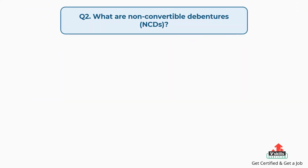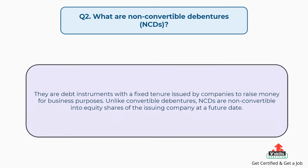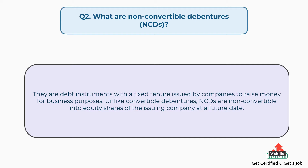Question number two: what are non-convertible debentures (NCDs)? The answer is, they are debt instruments with a fixed tenure issued by companies to raise money for business purposes. Unlike convertible debentures, NCDs are non-convertible into equity shares of the issuing company at a future date.